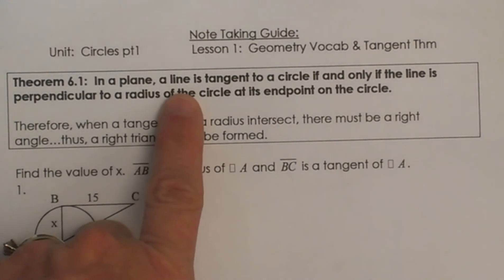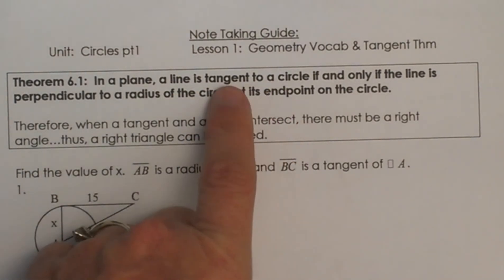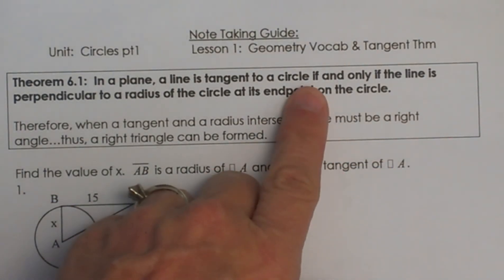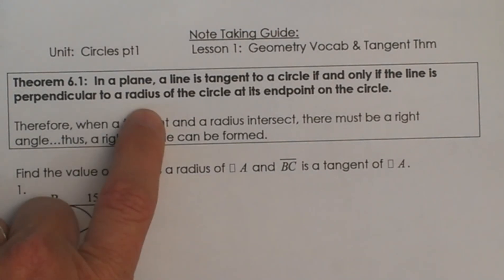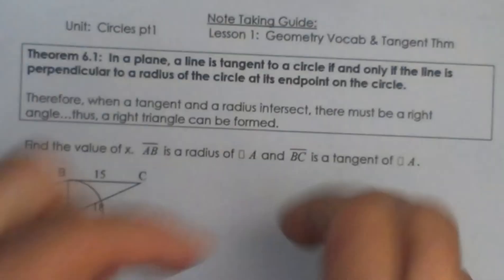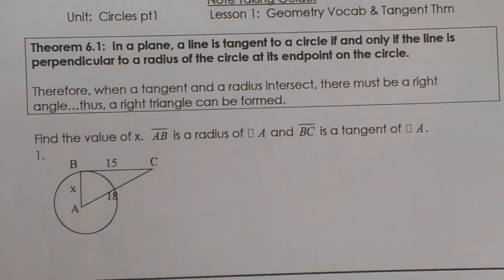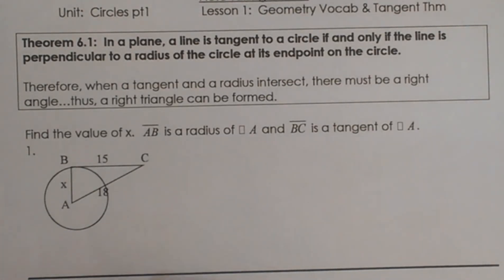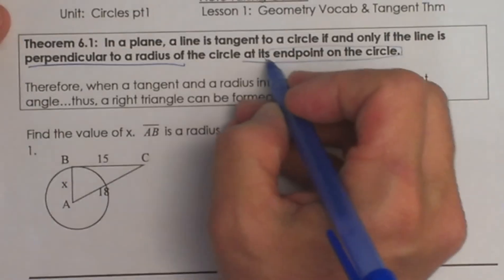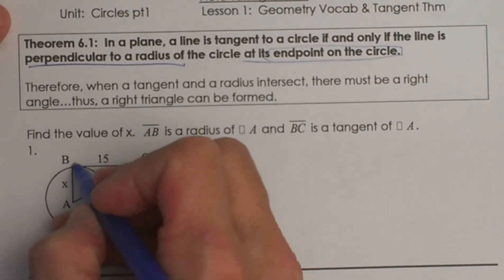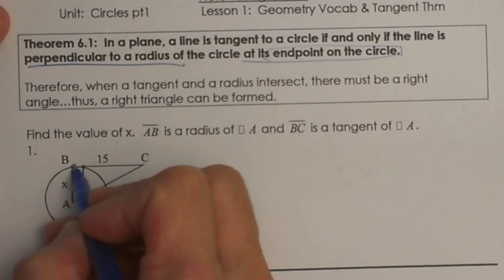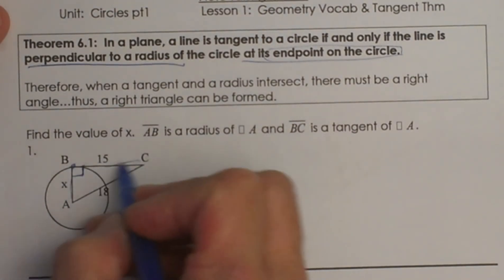It says in a plane, a line is tangent to a circle — in other words, a line touches a circle in one spot — if and only if the line is perpendicular to the radius. So when you have a line that is tangent to the circle, it is also going to be perpendicular, which means it forms a right angle with the radius. Here we have a picture of it, and that means this angle right here is going to be a right angle because we have a tangent line.